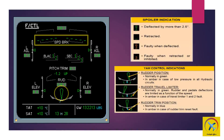Rudder trim position is normally shown in green, turning amber in case of low pressure in all hydraulic circuits. The rudder travel limiter is normally in green; rudder and pedal deflections are limited as a function of speed. The rudder travel limiter shows in amber in case of travel limiter 1 and 2 fault. The rudder trim position is normally in blue, turning amber in case of rudder trim reset fault.